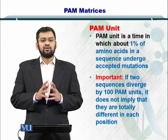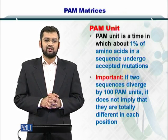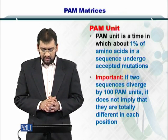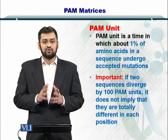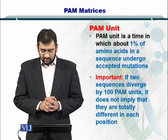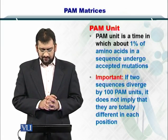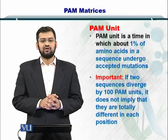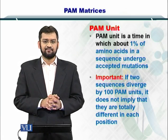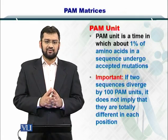We need to understand what the PAM unit is. Simply put, the PAM unit — or point accepted mutation unit — is a time period in which about 1% of the amino acids in a sequence undergo mutation. That is called PAM1.